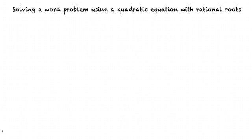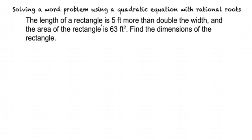Let's break that down. Consider the following word problem. The length of a rectangle is 5 feet more than double the width and the area of the rectangle is 63 feet squared. Find the dimensions of the rectangle.